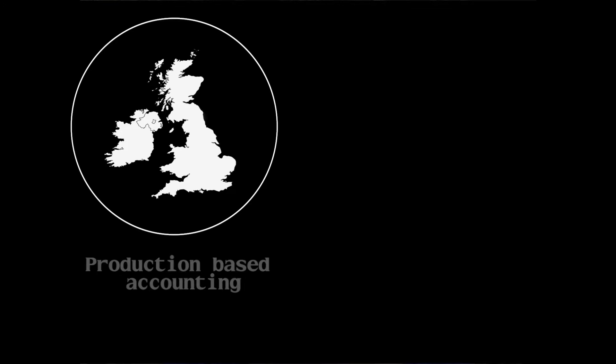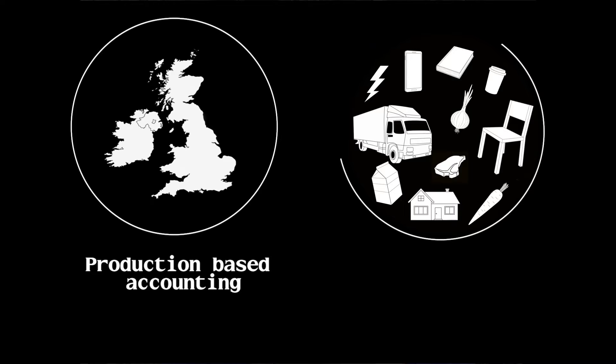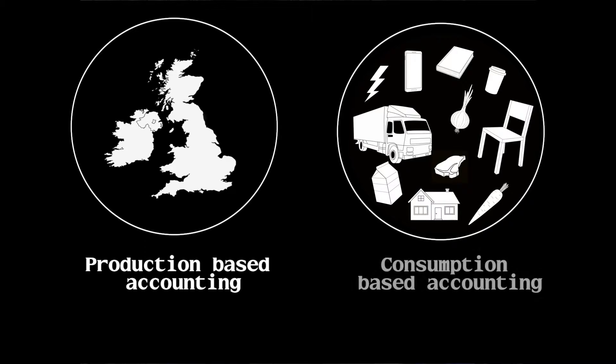There are two different approaches to calculating a country's carbon footprint. We can add up all the emissions that are produced within that country — this is called production-based accounting. Or we could add up all the emissions associated with the goods and services consumed within that country — this is called consumption-based accounting.